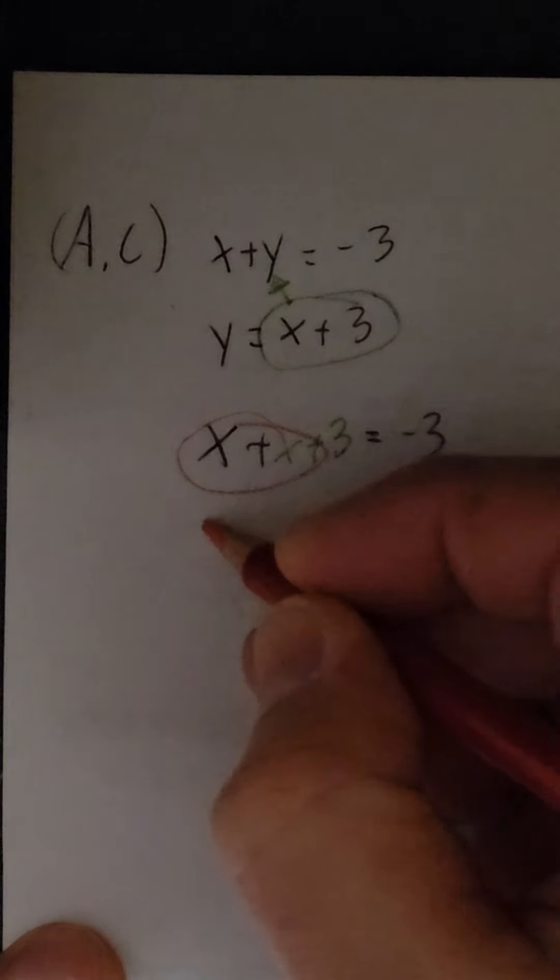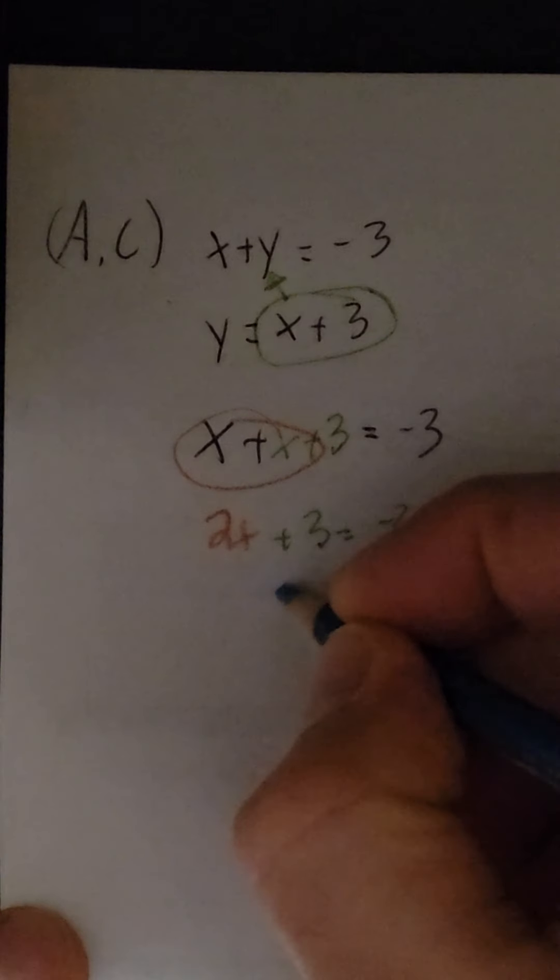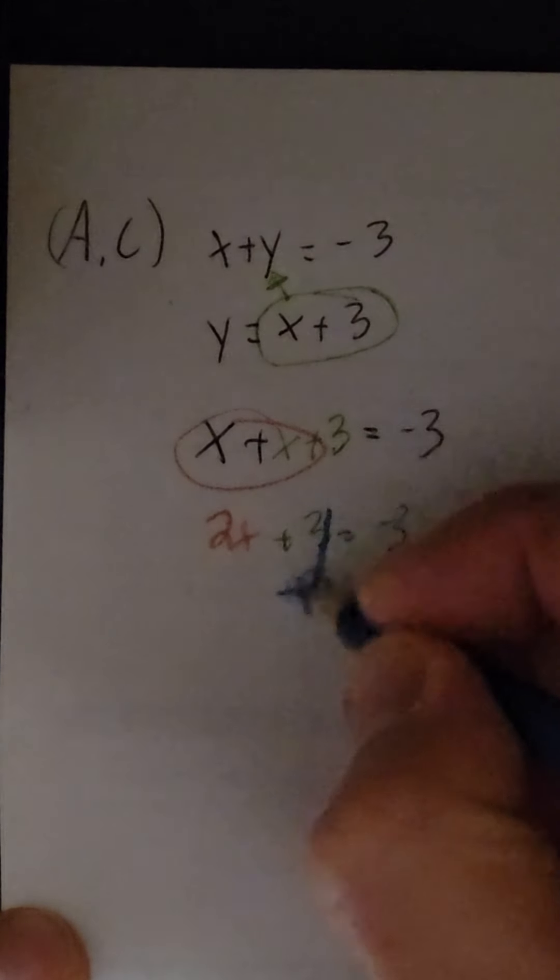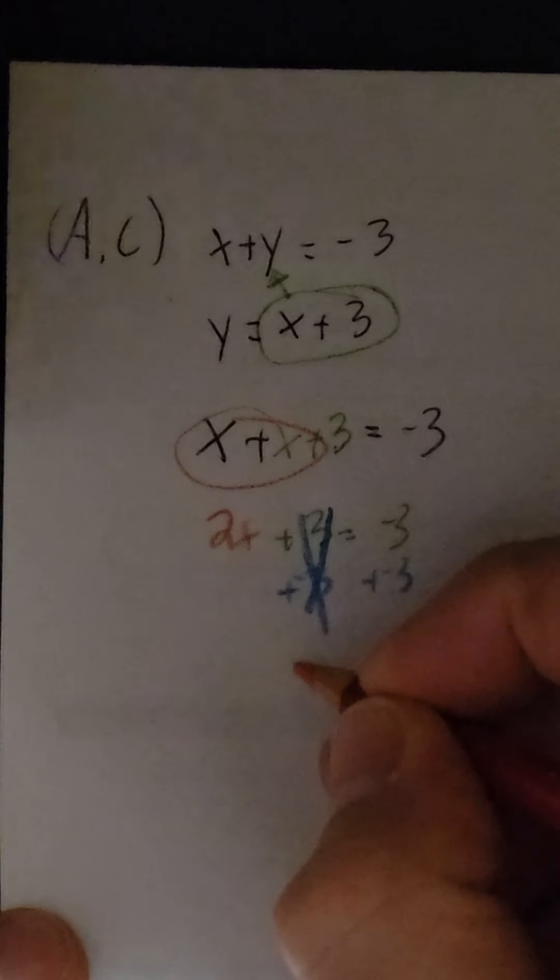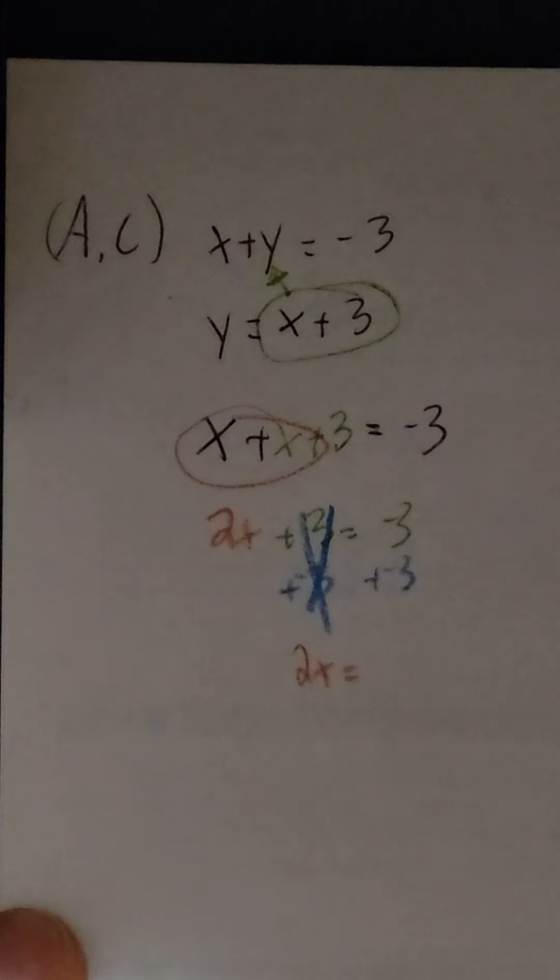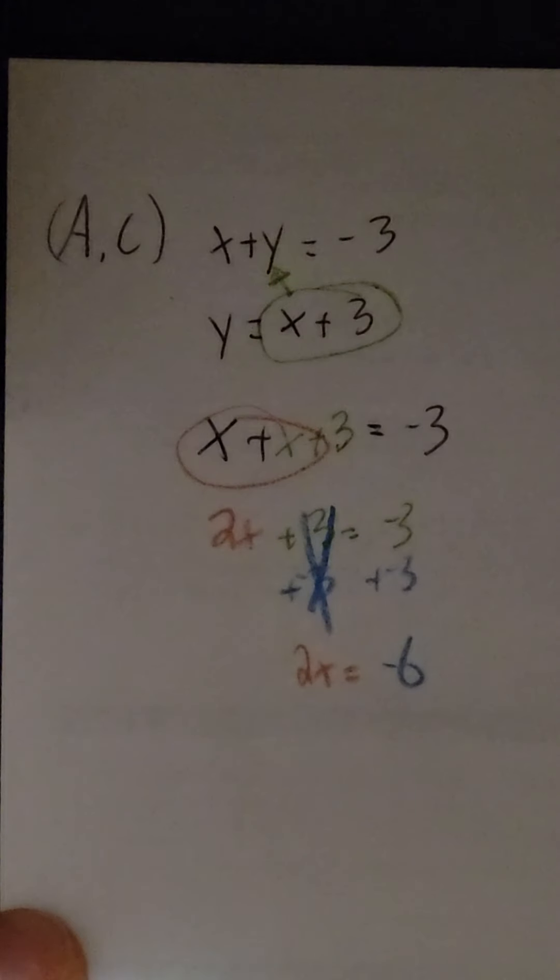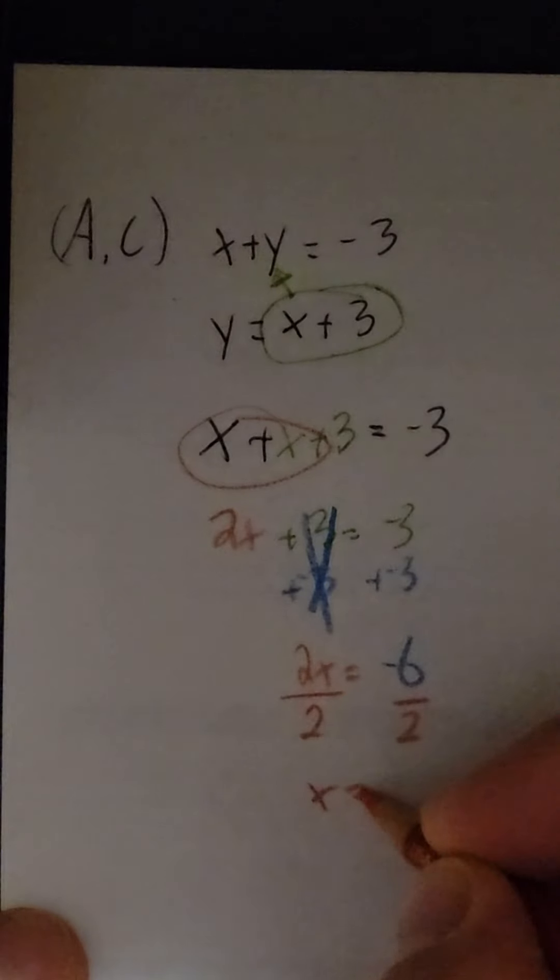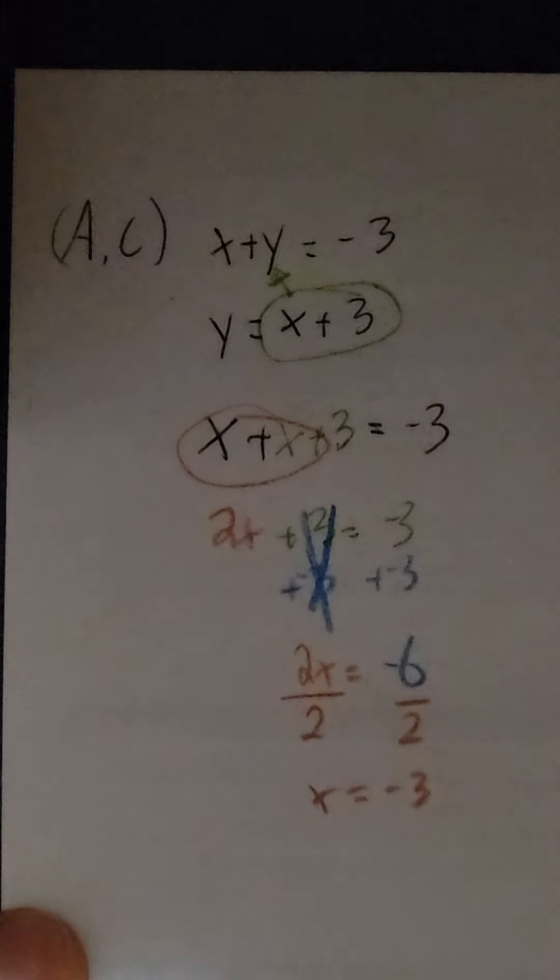x plus x gives you 2x plus 3 equals that negative 3. Solve that equation by adding or subtracting 3, or I will add a negative 3 to both sides. So those cancel, you've got 2x equals negative 6, divide by 2, x equals negative 3.